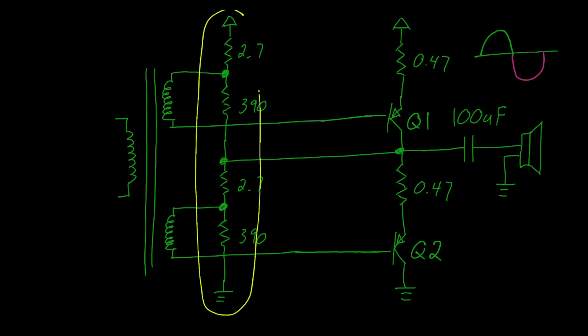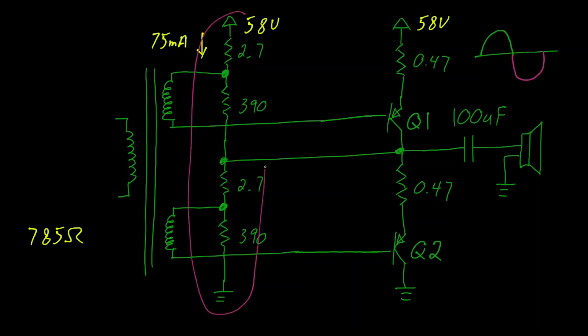We can calculate the resistance for this string. That works out to be about 785 ohms. Knowing that there's a 58 volt supply, we can calculate this current flowing as about 75 milliamps. This has some interesting implications. The first thing you'll notice is that if you run the calculations, this resistor bias network is going to consume about 4.3 watts. So we'll call that P bias.